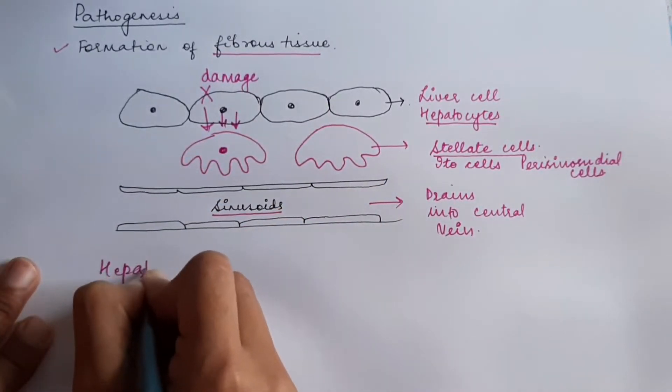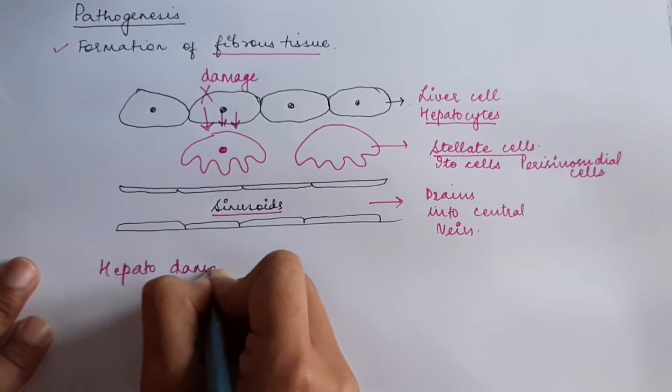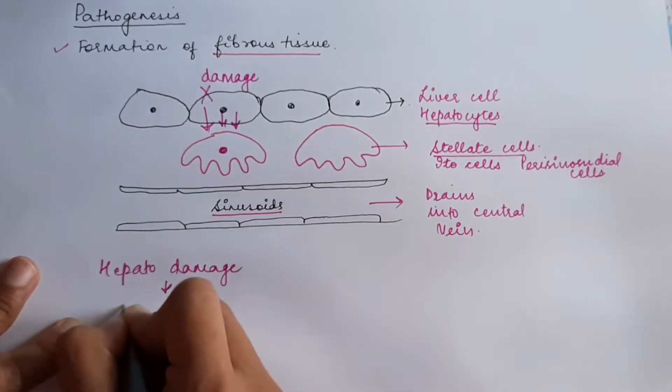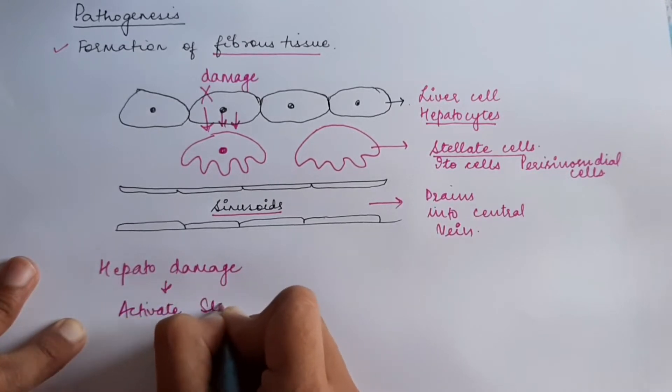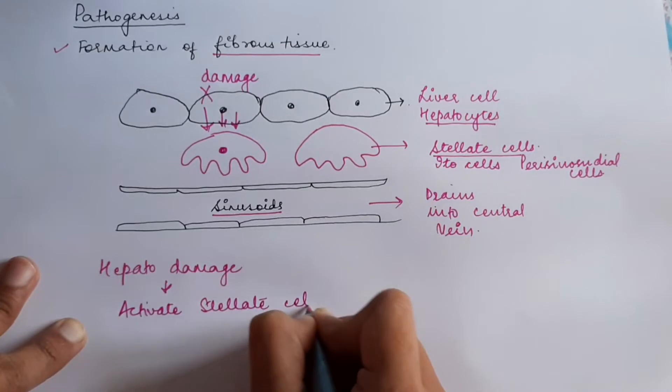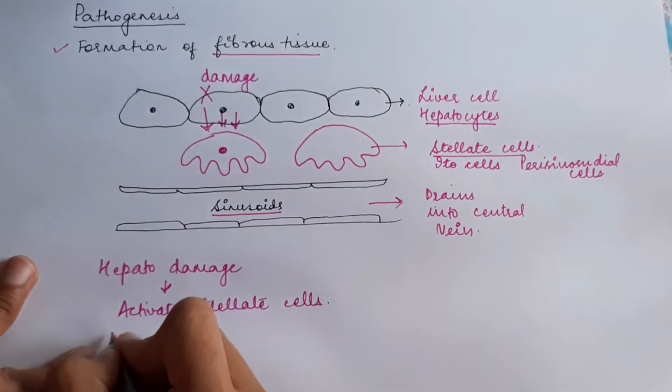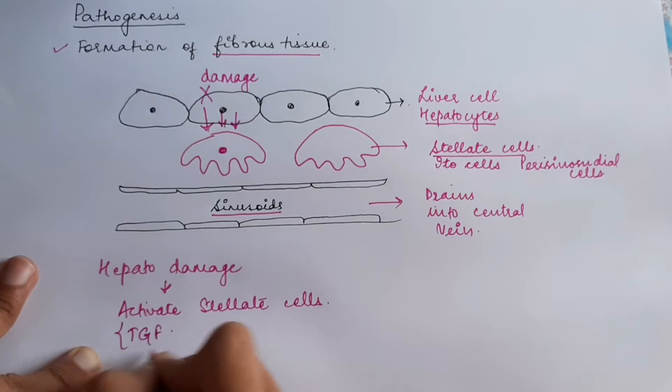Hepatocyte damage will activate stellate cells. This activation is with the help of TGF, that is tissue growth factor, and cytokines.